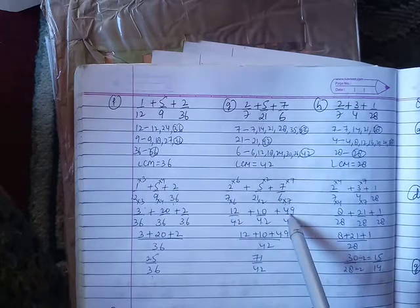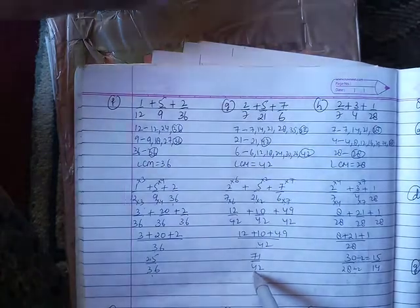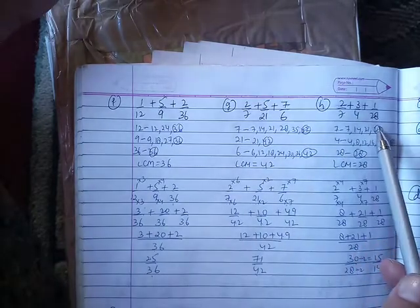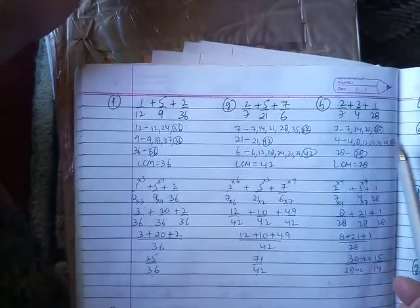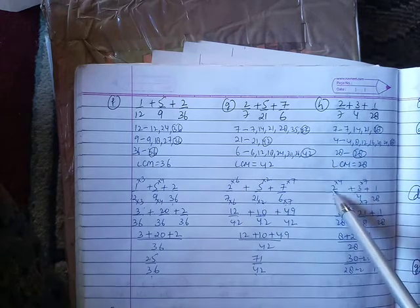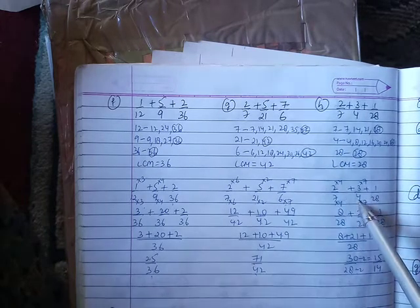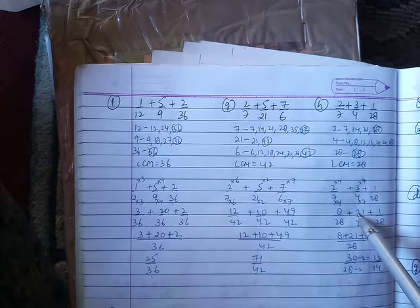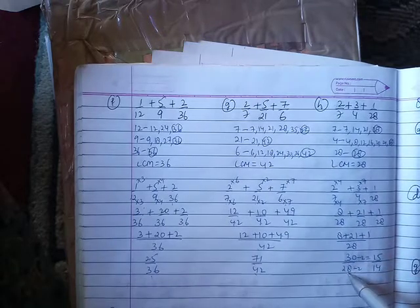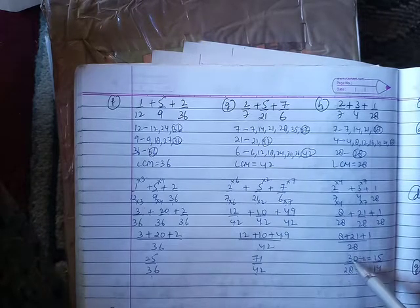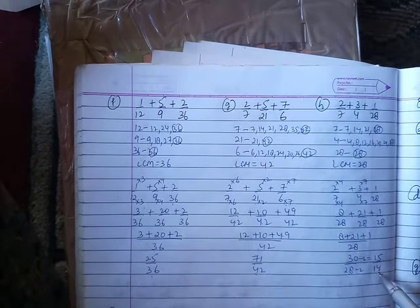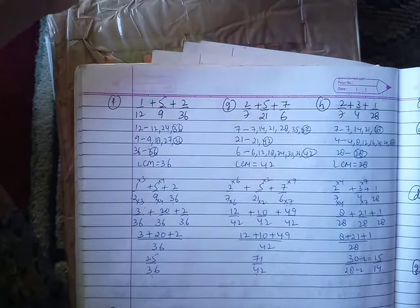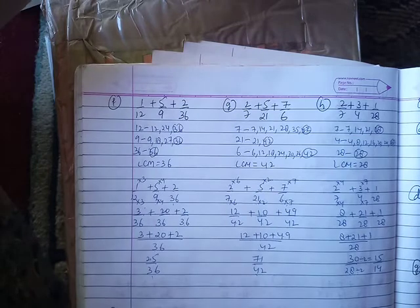Part h: 2 by 7, 3 by 4, and 1 by 28. Finding multiples: the LCM is 28. Multiply: 7 times 4 equals 28, so 2 times 4 equals 8. Three times 7 equals 21, plus 1 equals 30 by 28. Divide by 2: 15 by 14 is the answer. That's subtraction. Thank you.